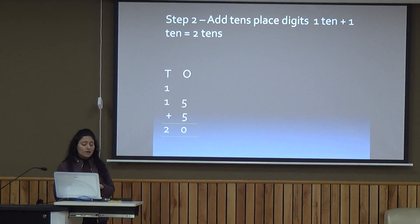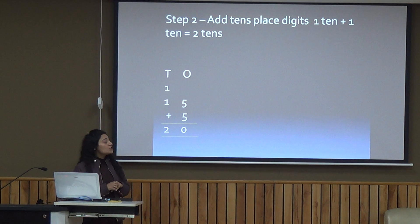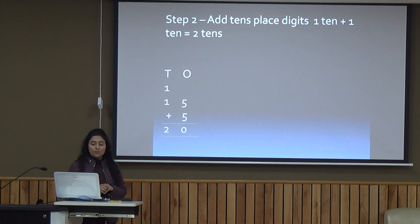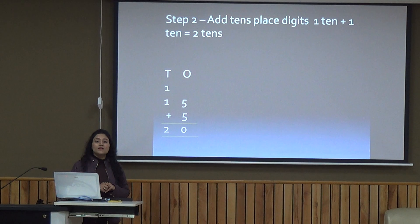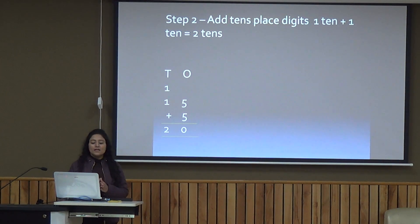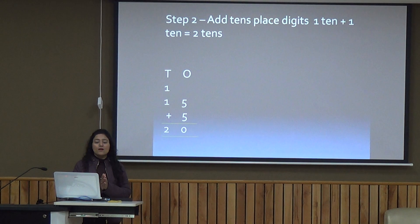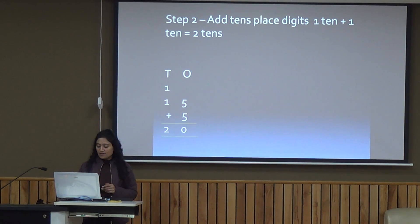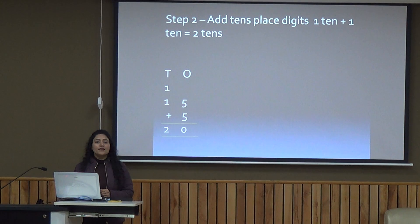Let's go through this sum. We arrange 15 plus 5, then add 5 plus 5 to get 10. We place 0 at the ones place and carry 1 over to the tens place. Then 1 ten plus 1 ten gives us 2 tens. For better understanding, let's watch this video.